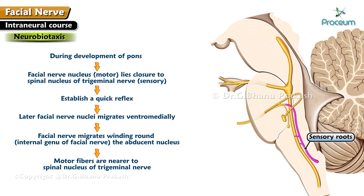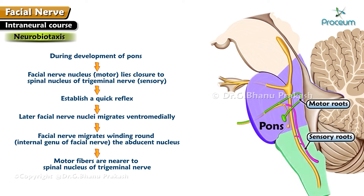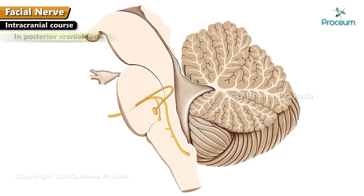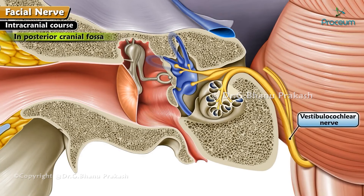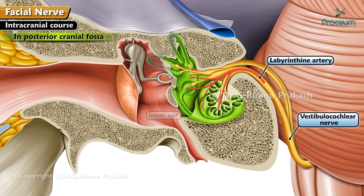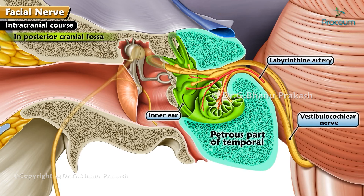The sensory and motor roots converge and exit from the pontomedullary junction. Intracranial course in the posterior cranial fossa: the two roots of the facial nerve run towards the cerebellopontine angle along with the vestibulocochlear nerve and labyrinthine artery, to enter the petrous part of the temporal bone via the internal acoustic meatus.